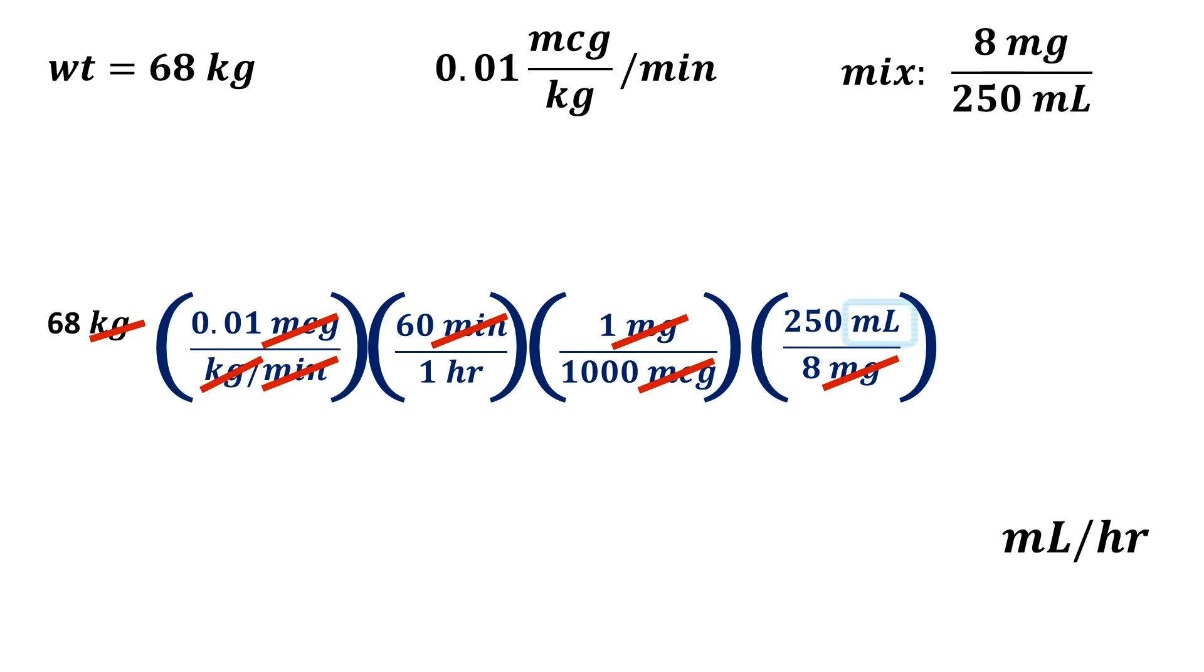We're now left with milliliters per hour which is the answer we want and now we know that our equation is dimensionally correct and all we have to do is run the math. Now we have a lot of terms here and order of operation is important. So in order to run the math correctly we have to multiply all the numerators together, get a total, then multiply all the denominators together to get a total. This leaves us with 10,200 divided by 8,000 which equals 1.275 milliliters per hour.